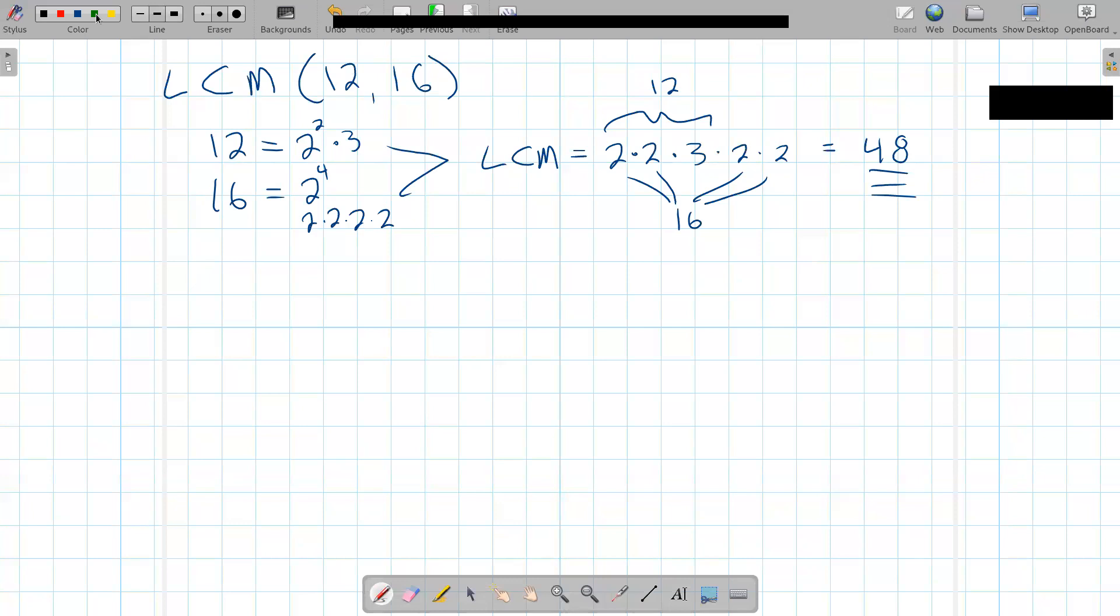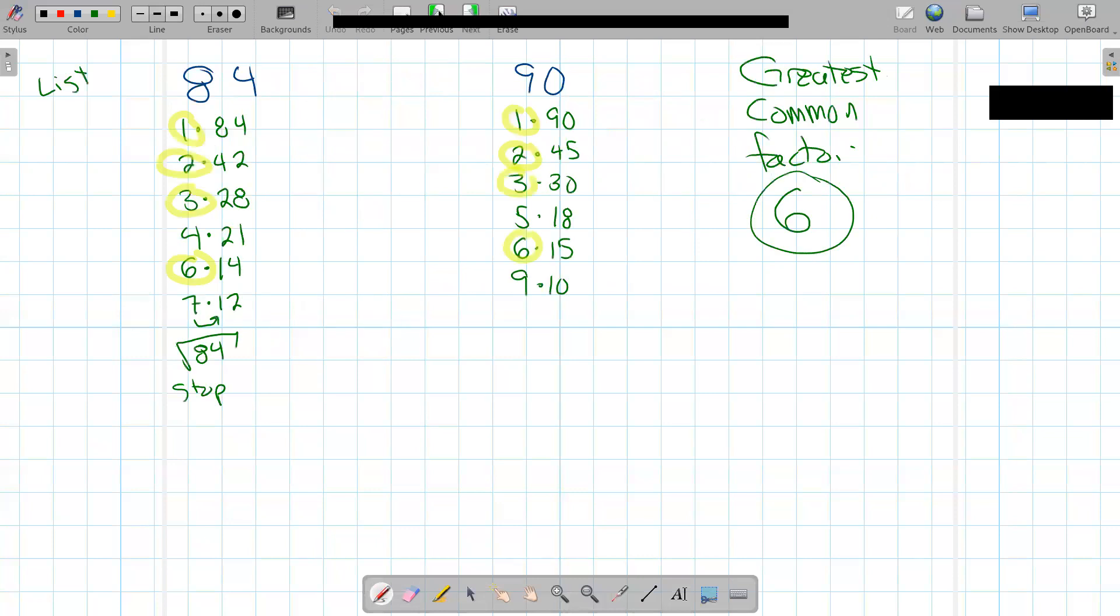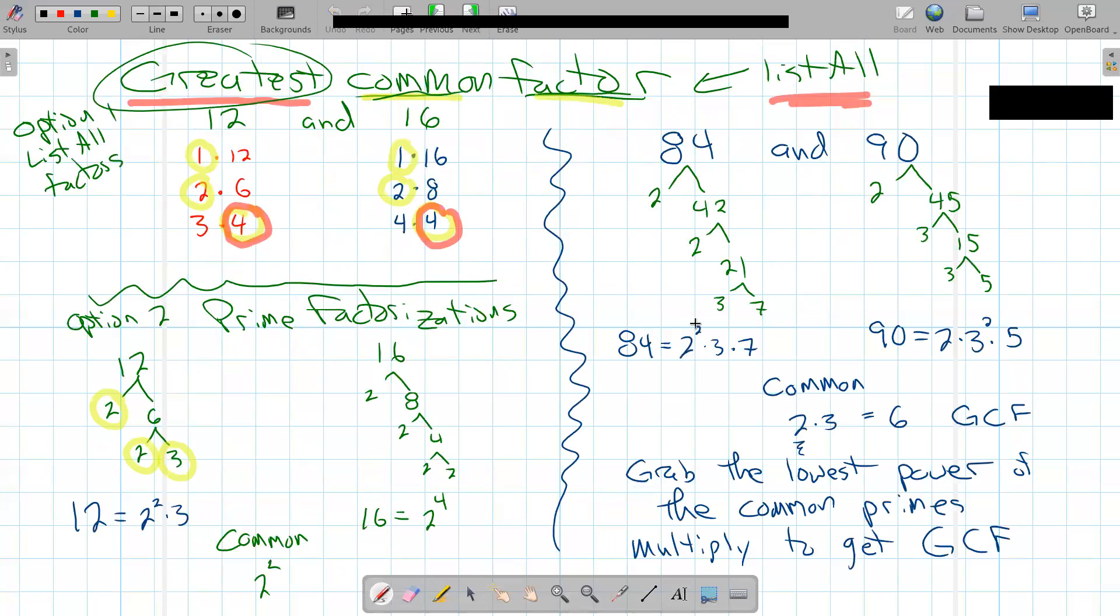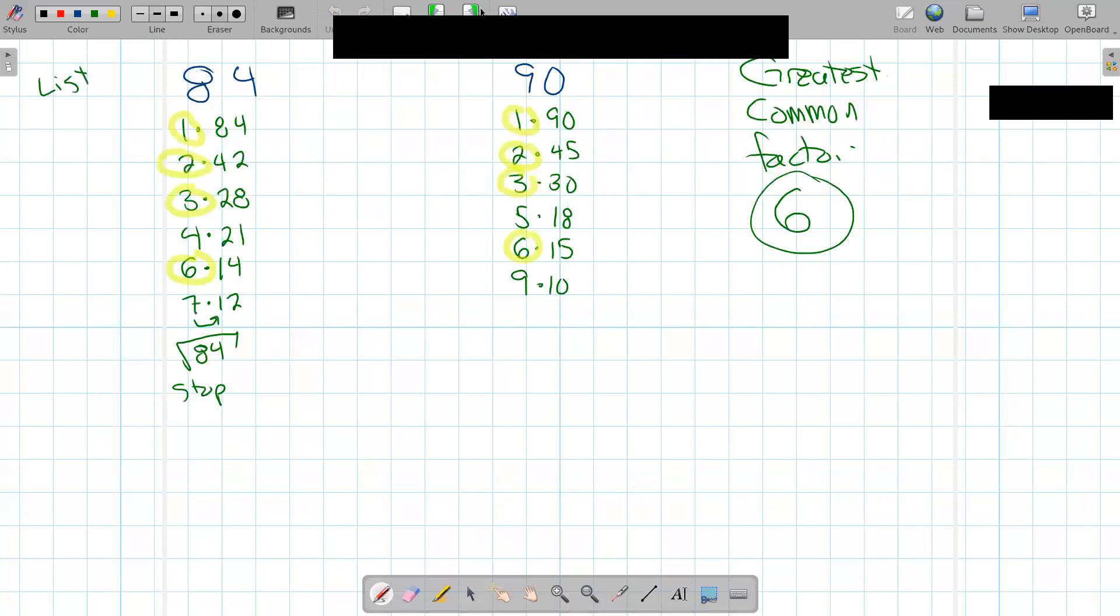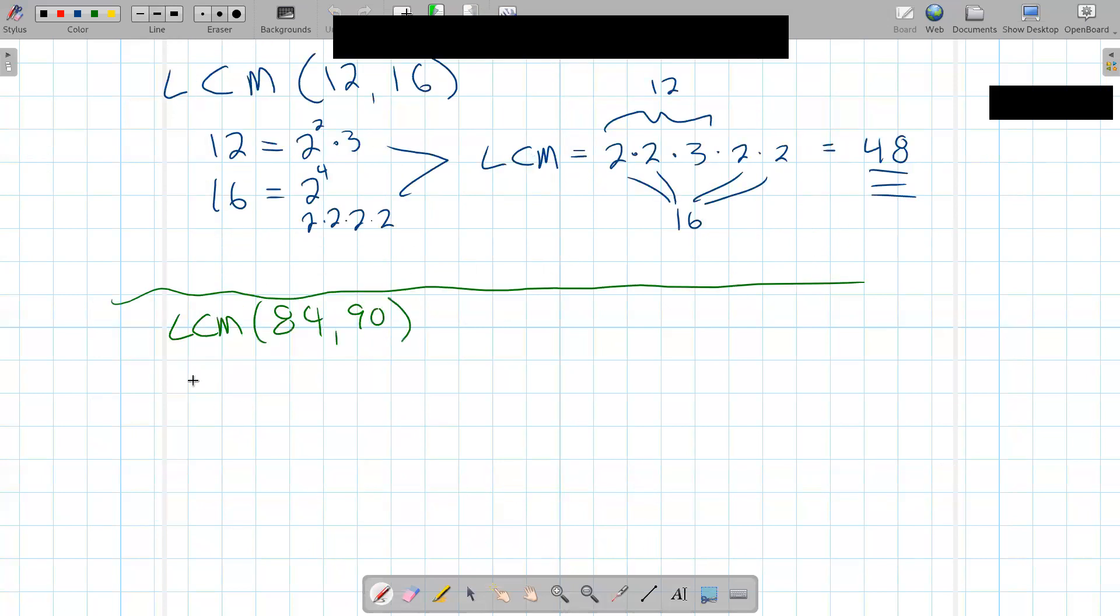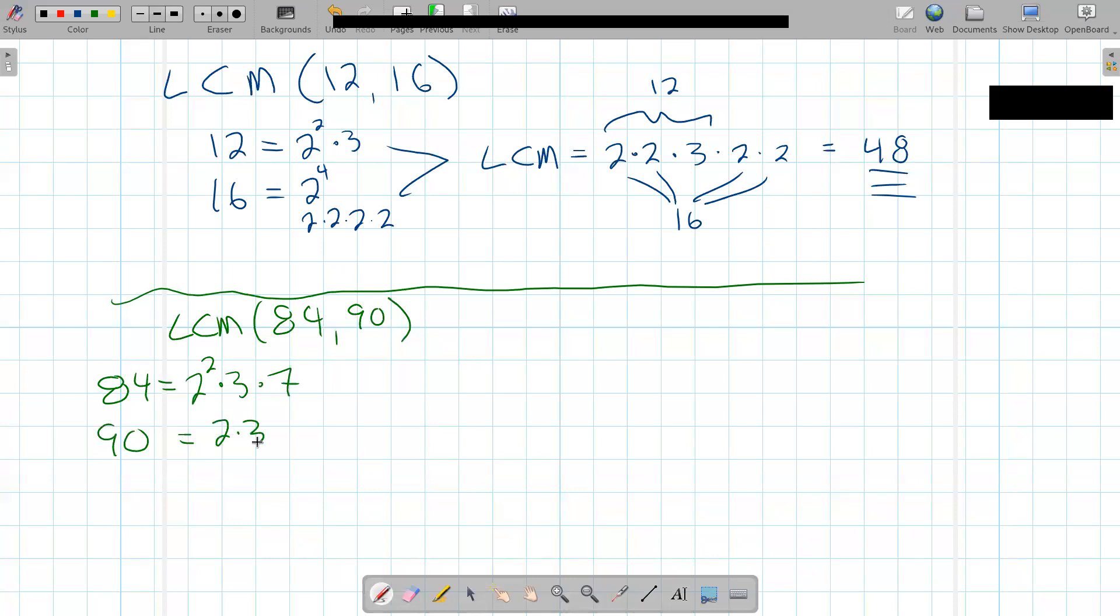Let's do this for 84 and 90. And then there's an interesting relationship that forms. So 84 we factored earlier. Let's look back. 84 was 2 squared times 3 times 7. So that's 84. And 90 was 2 times 3 squared times 5.